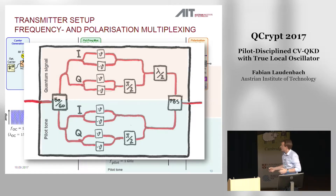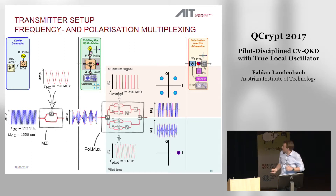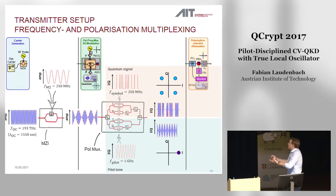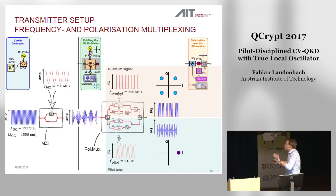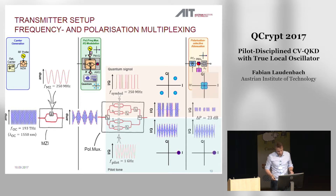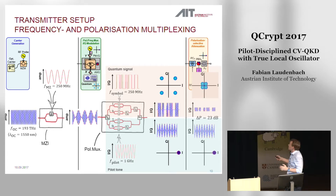Alice's laser gets split up into two branches, and the quantum signal and the pilot tone each get IQ-modulated independently from one another, then recombined with orthogonal polarization. In our experiment, the quantum signal gets modulated with a 250 MHz QPSK modulation — a modulation alphabet with four points in phase space. Independently, the pilot tone gets modulated with a simple 1 GHz cosine function, which yields a high-amplitude fixed point in phase space, later used to estimate the relative phase between Alice's and Bob's laser. The third step is attenuation of the quantum signal; the relative power difference between the pilot tone and the quantum signal corresponds in our experiment to roughly a factor of 200.